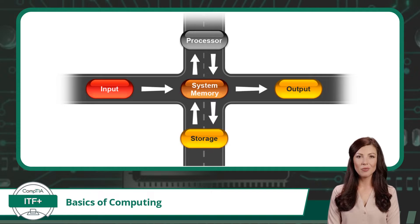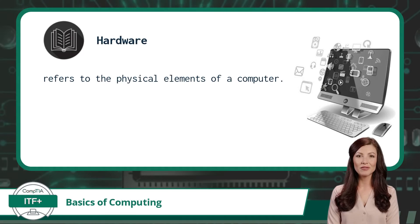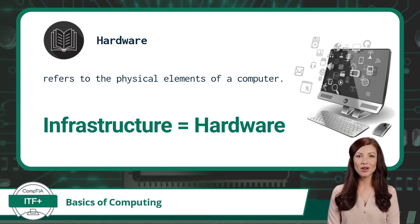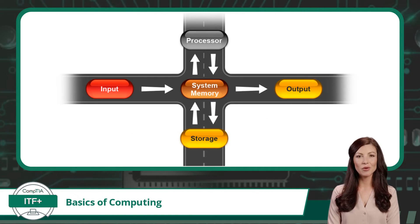In the middle of all this, we have the system memory that serves as a staging or holding area for data. Data physically moves about a computing device using the device's hardware. Hardware refers to the physical elements of a computer. Another common word used in IT to refer to hardware is infrastructure. So if you hear the word infrastructure, think hardware. From our previous traffic example, hardware would be the roadways.